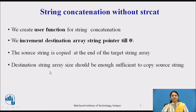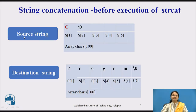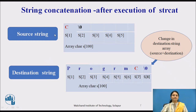While declaring the destination string, check what is the size of both strings and keep enough space. We can see two strings: the source string has a single character 'C' followed by the null character, and the destination string has 'program' and null — six characters and one character respectively. After running strcat, the source string remains as it is, and the destination will have 'program' plus 'C', that is, destination plus source.